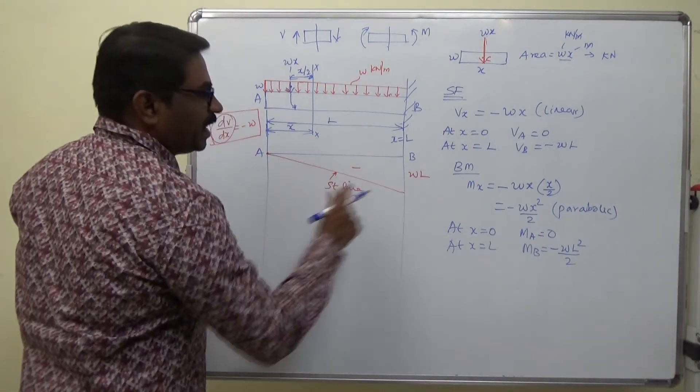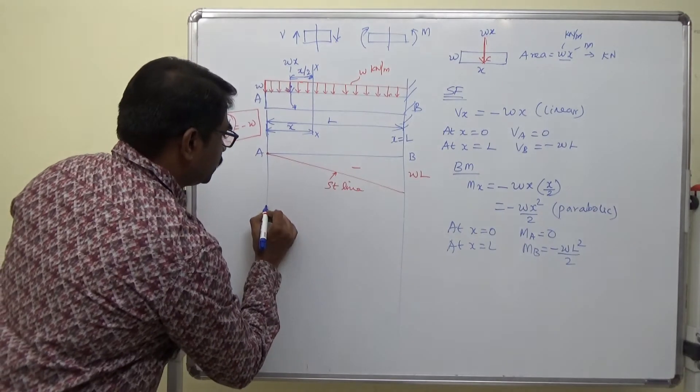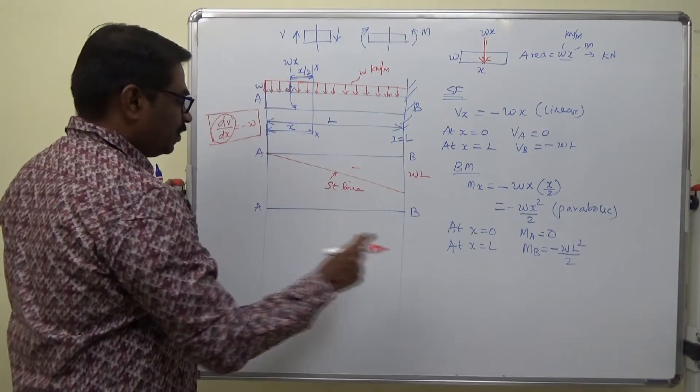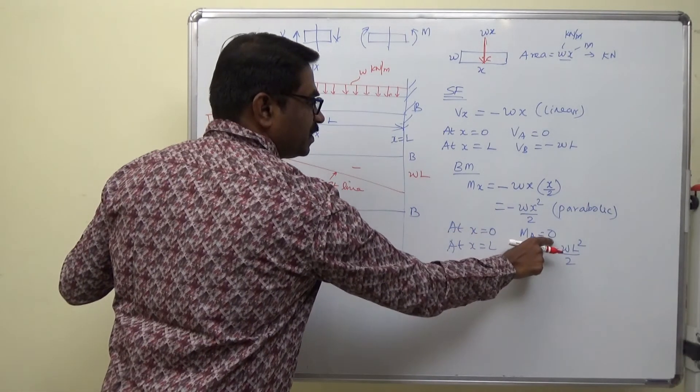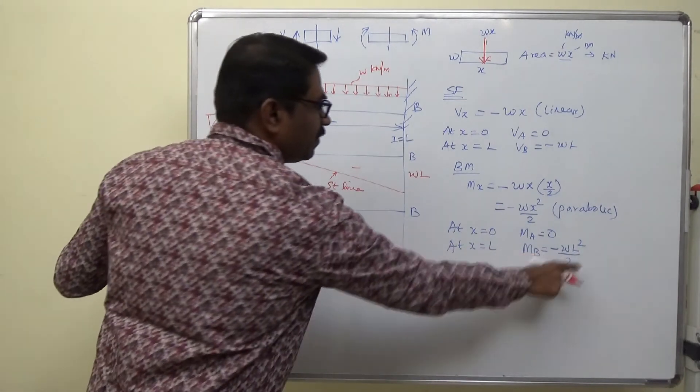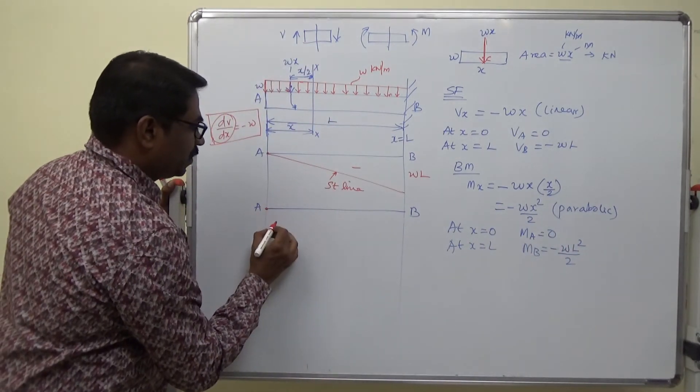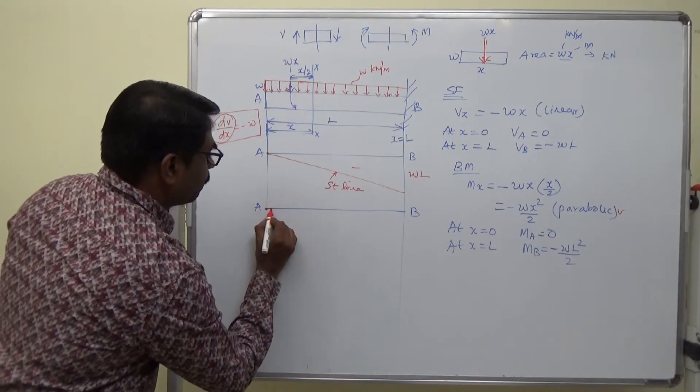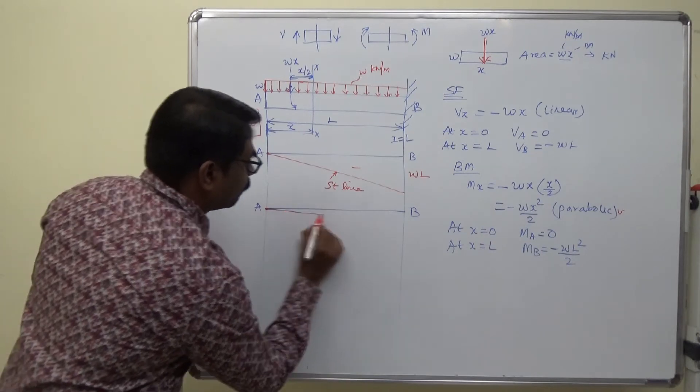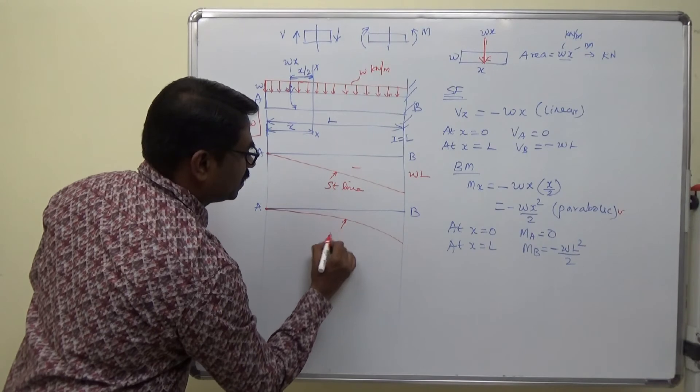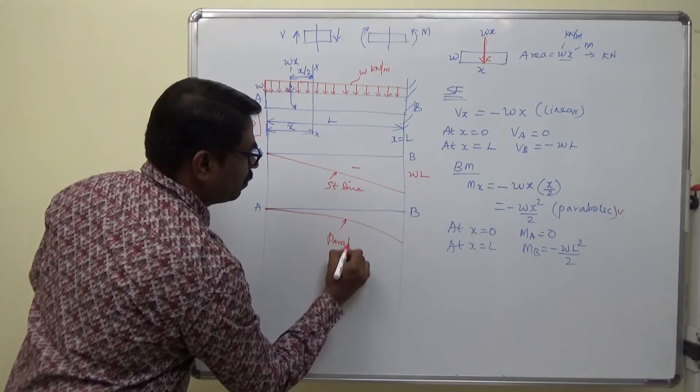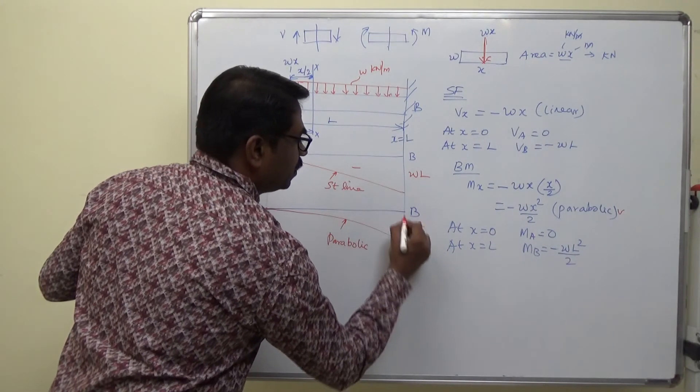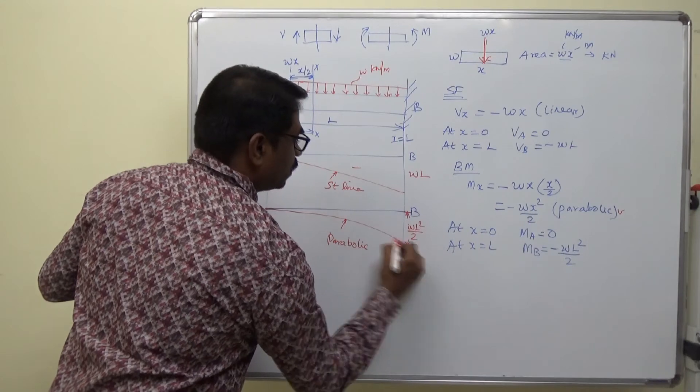Now we will draw the bending moment diagram. That is also negative. I am using here A, B. At A, M_A is 0. At B, we have this much. What is the variation? Variation is parabolic. It is W L square by 2, negative.